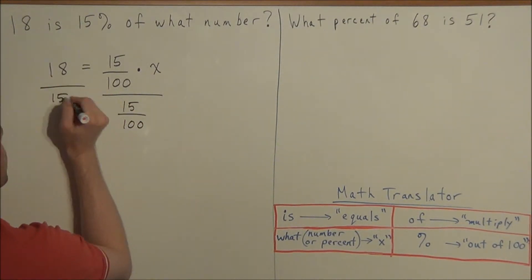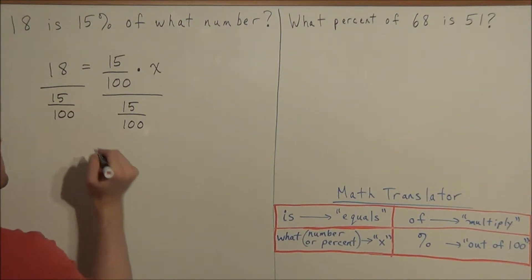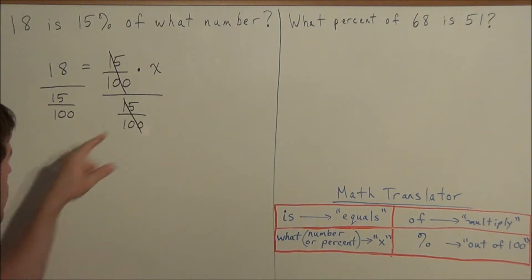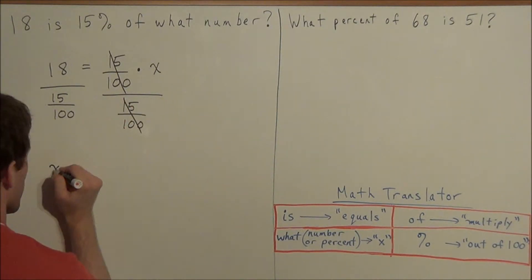And now on the right-hand side, 15 over 100 divided by 15 over 100 will cancel. And now all we're left with is x, so we have x equals.